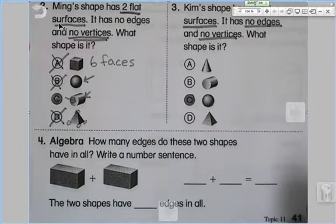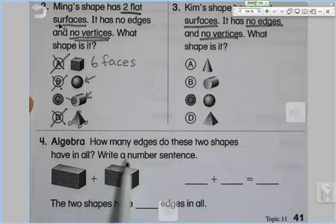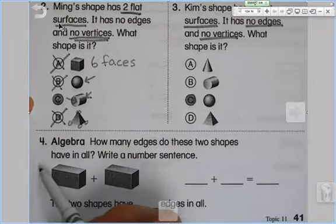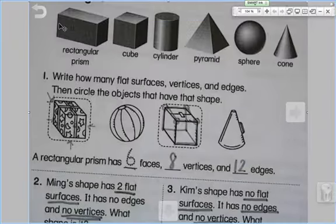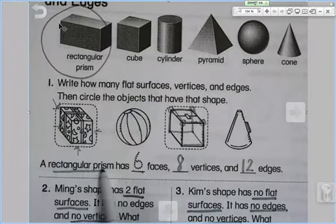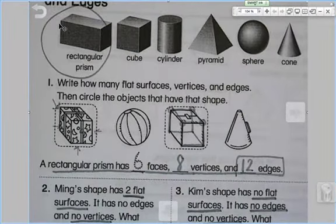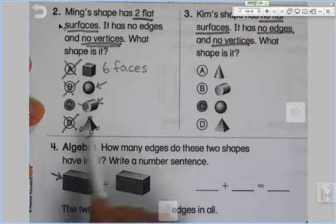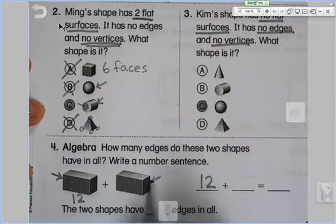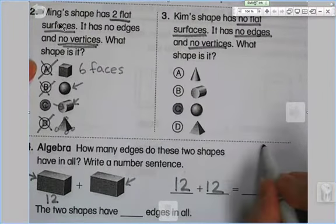Now we're going to go into a little algebra. A little bit of tricky work here. See if I can't fool some of you. How many edges do these two shapes have in all? Well, we're going to cheat a little bit. What is this shape, first of all? Let's look up at our list up on top. It is a rectangular prism. Did we just do a rectangular prism has six faces, eight vertices, and twelve edges? We did. So how many edges does this one have? This one has twelve. So if this one has twelve, how many does this one have? If you wrote twelve, you are correct.